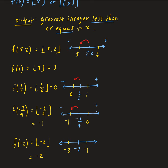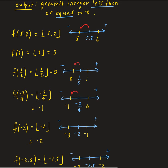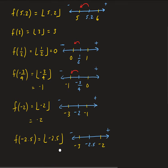Let's look at f of minus 2.5. On the number line, minus 2.5 sits between negative 3 on the left and minus 2 on the right. We want the greatest integer less than or equal to x, so the greatest integer smaller than negative 2.5 is going to be minus 3.